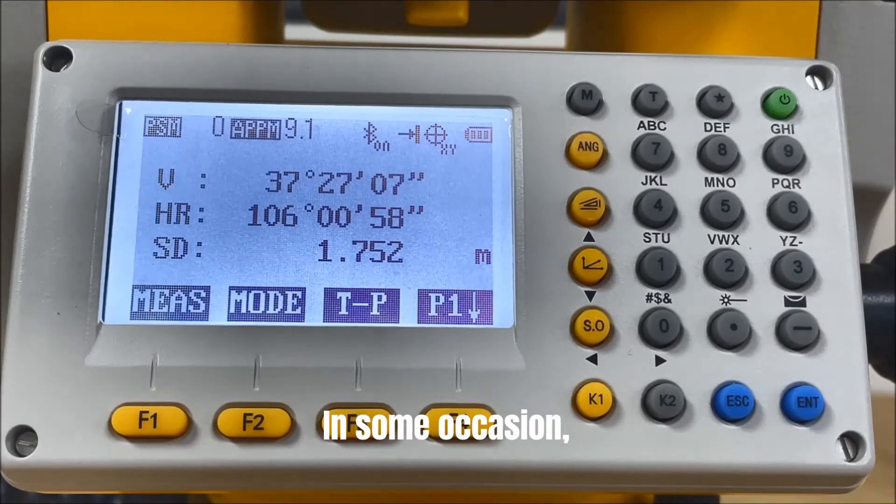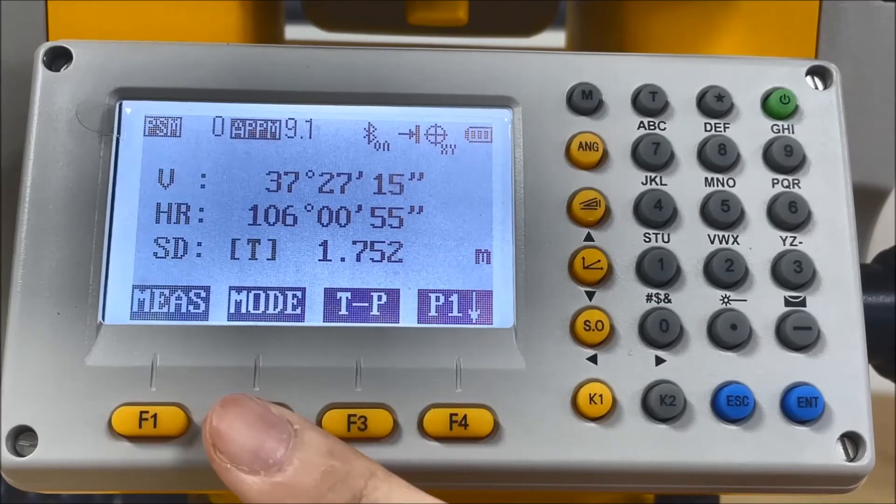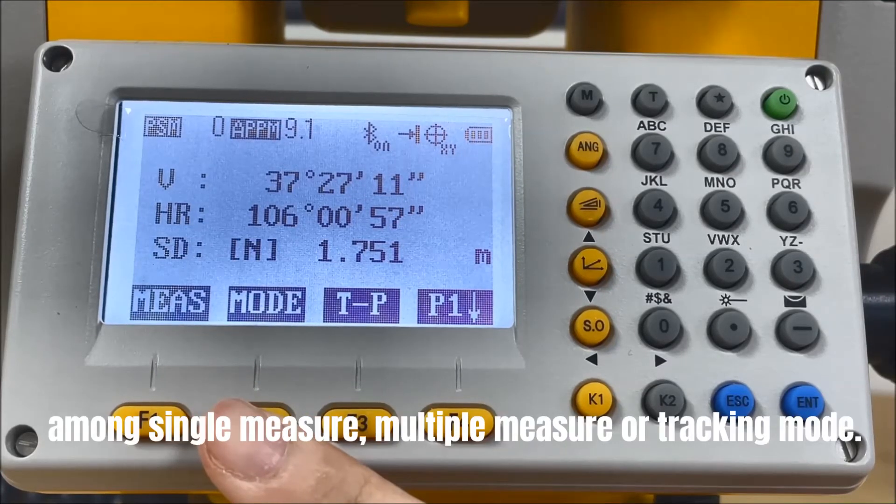In some occasions, when you need multiple measurements to ensure accuracy, press F2 Mode. The measure mode will be changed among single measure, multiple measure, or tracking mode.